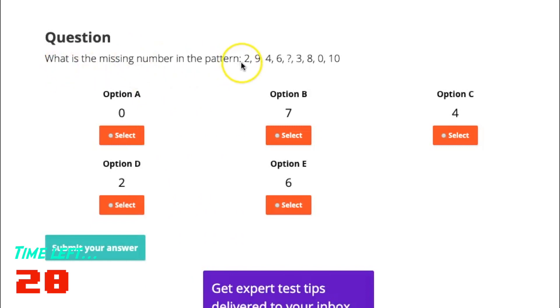Okay, so what is the missing number in this pattern: 2, 9, 4, 6, going up and then going down? It looks really irregular, so it must be jumping. The answer here is 6, so I'm going to click 6 here and then submit the answer.